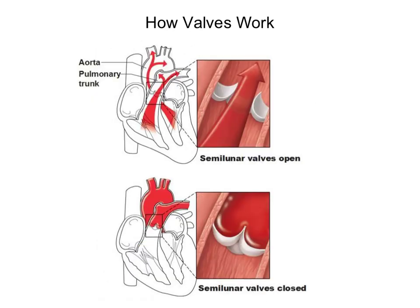Next, we're going to take a look at how semilunar valves work. Semilunar valves are found between the ventricles and the major blood vessels that exit the heart — the aorta and the pulmonary trunk. Unlike atrioventricular valves, there are no chordae tendineae or papillary muscles to help close the cusps of the valves. So how do semilunar valves close? They use blood and gravity. When the ventricles relax after contraction, the blood that was forced through the aorta and the pulmonary trunk settles. As the blood settles due to gravity, it pools behind the cusps of the valves, forcing them to close, which prevents blood from flowing back into the ventricles.